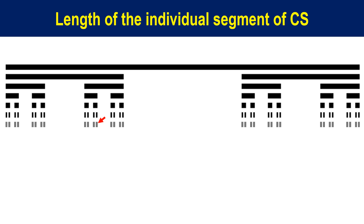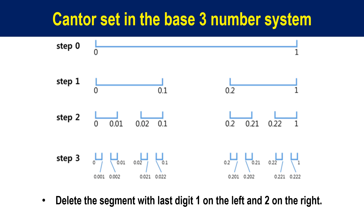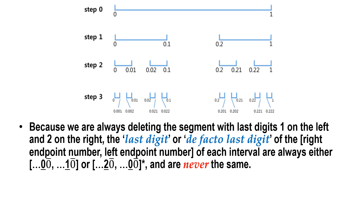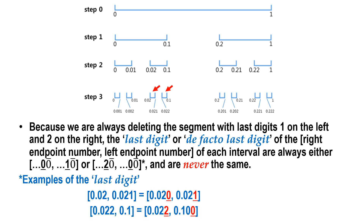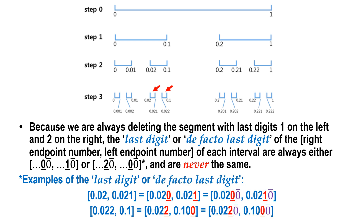I show that the length of each individual segment of the Cantor set is larger than 0. In the base-3 number system, constructing the Cantor set involves deleting segments with last digit 1 on the left and 2 on the right. Because we are always deleting such segments, the last digit or de facto last digit of the right and left endpoint numbers of each interval are always either 0 and 1, or 2 and 0, and are never the same. Examples of the last digits are shown. These last digits are followed by infinite iterations of zeros.